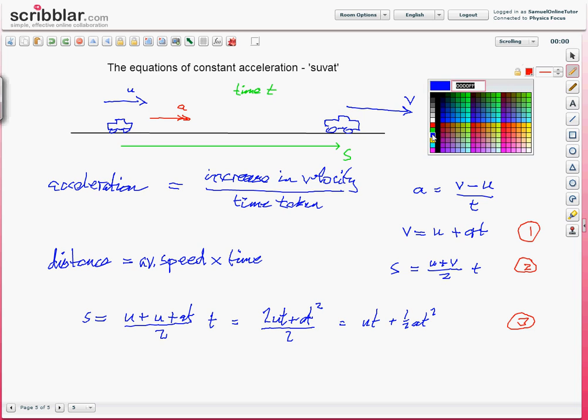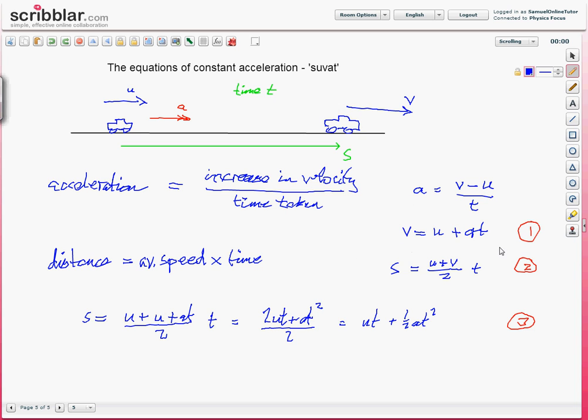Now if instead of doing that we've taken this first equation here, equation 1, rearranged it to give t equals v minus u over a. That's just taking equation 1 and rearranging it. That's not a new equation at the moment, just a different form of equation 1. Take that and substitute that into equation 2. So now we have s equals u plus v, or I'm going to put that the other way around, v plus u over 2, multiplied by t, which we are now substituting v minus u over a.